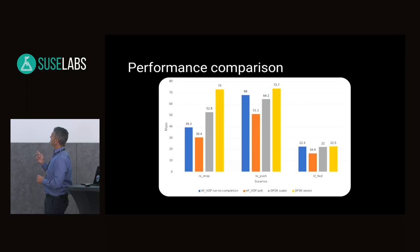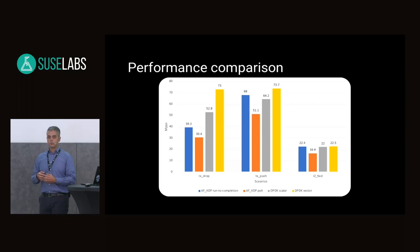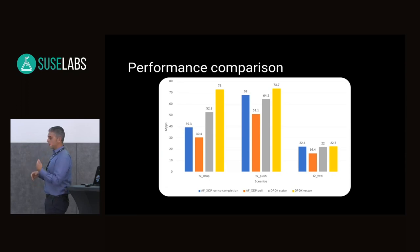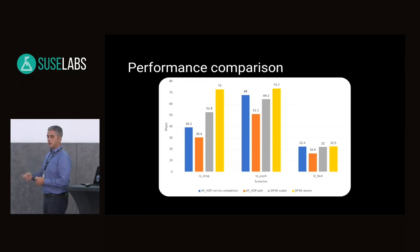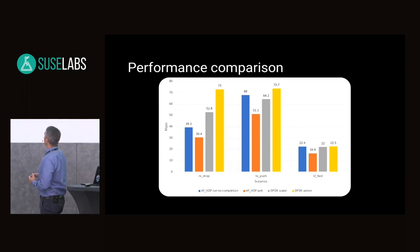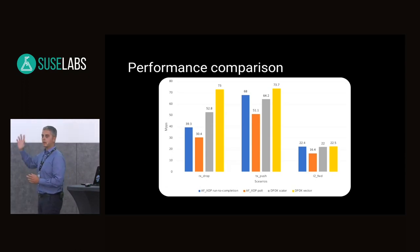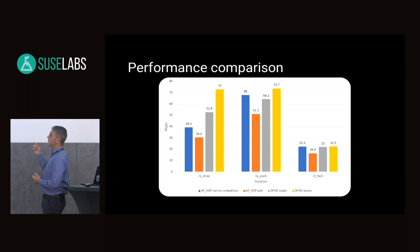I want to show you a graph comparing performance among different technologies and in different scenarios. I have on this graph also the XDP numbers, which is the new approach to eBPF in the kernel. The three different scenarios are: RX drop — just receiving packets and dropping them, like a blind firewall that blocks everything; TX push — sending packets out to the network; and standard L2 forwarding. What's really interesting, beside the huge performance throughput that DPDK shows, is the closing up of the kernel networking throughput thanks to XDP.